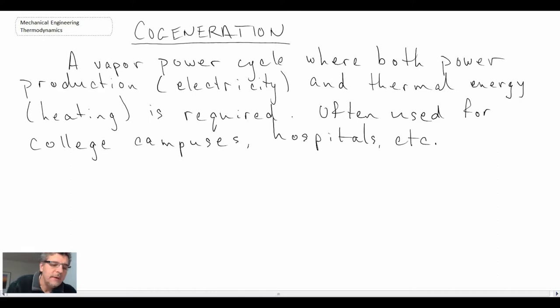So cogeneration is an application whereby we both need electricity, so power production, as well as thermal energy for heating. Quite often these systems will be places like college campuses or hospitals. However, certain places use this for municipal heating, and probably the most famous and successful globally would be the city of Copenhagen in Denmark.